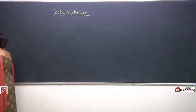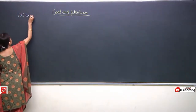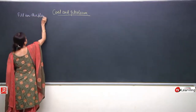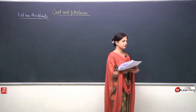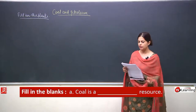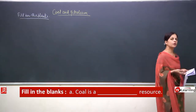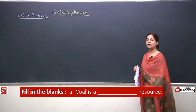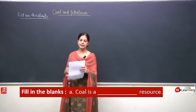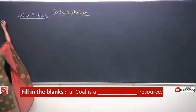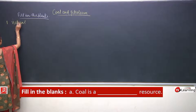First of all we will begin with fill in the blanks. The first one is: coal is a dash resource. We all know coal — we get it from nature. So which kind of resource is it? Obviously, it is a natural resource. Coal is a natural resource.